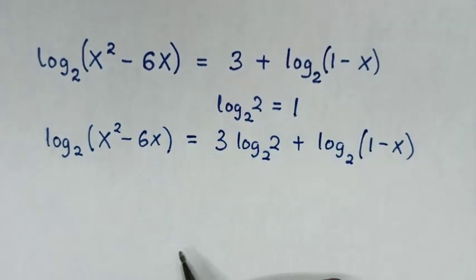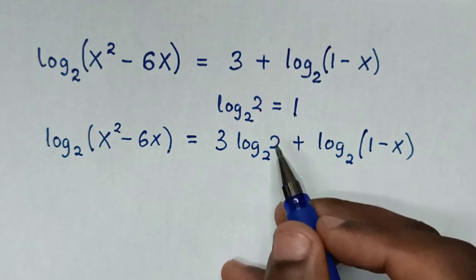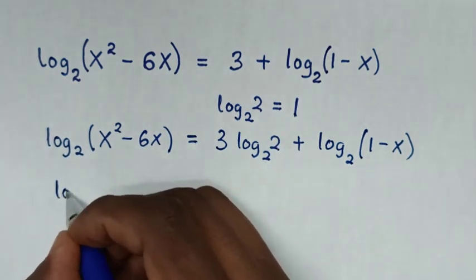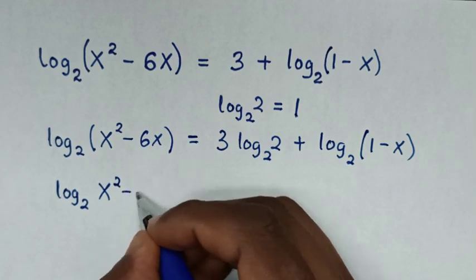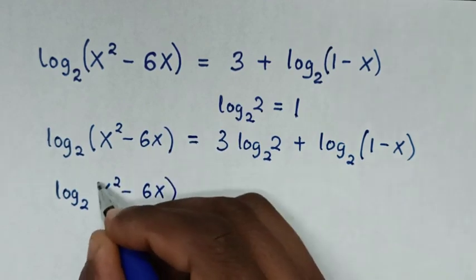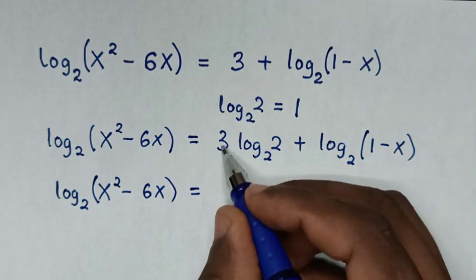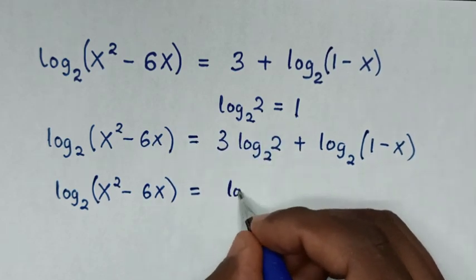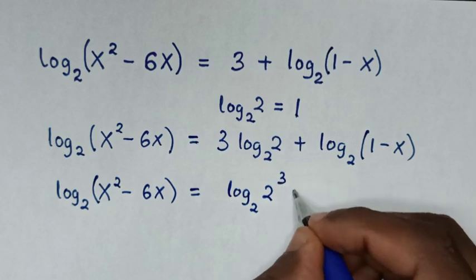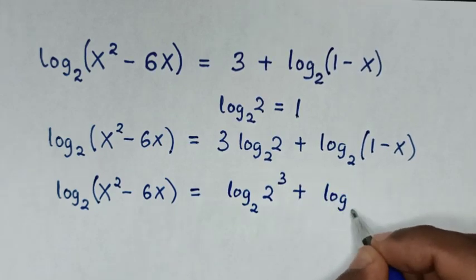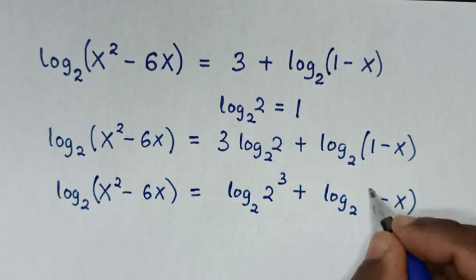Then in the next step, from the coefficient 3 we'll move it to the power. So our equation will be log base 2 of (x² - 6x) equals log base 2 of 2³, plus log base 2 of (1 - x).